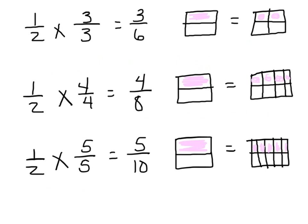So now let's take a look at one half times three thirds. That's going to equal three sixths. This three thirds is going to be that giant one because three thirds equals one. So one times three is three, two times three is six. We see one half and we see three sixths — same thing.